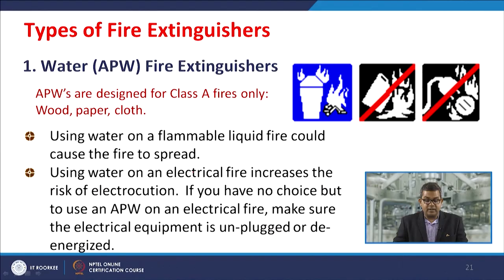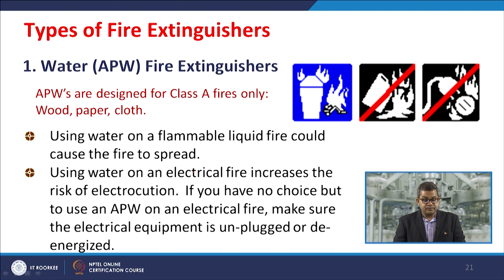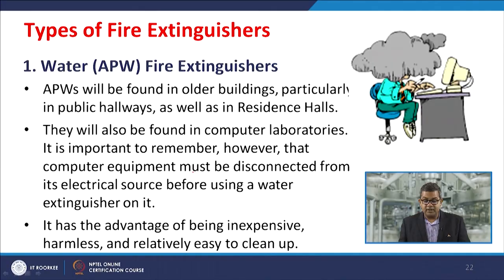APWs extinguish fire by taking away the heat element of the fire triangle through the formation of small droplets. These air pressurized water extinguishers are designed for Class A fires only — wood, paper, and cloth. Using water on flammable liquid fires could cause the fire to spread. Using water on an electrical fire increases the risk of electrocution. If you have no choice but to use an APW on an electrical fire, make sure the electrical equipment is unplugged or de-energized first.